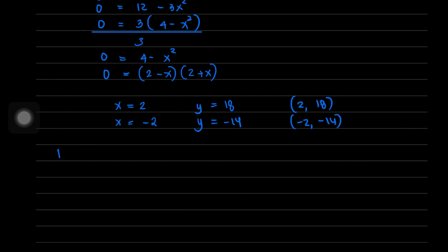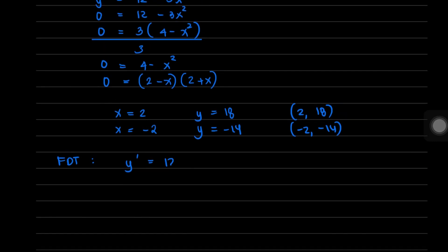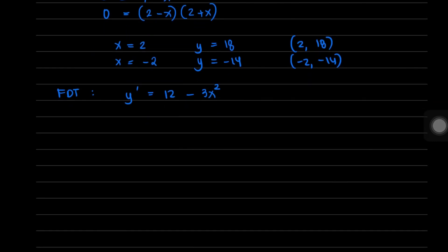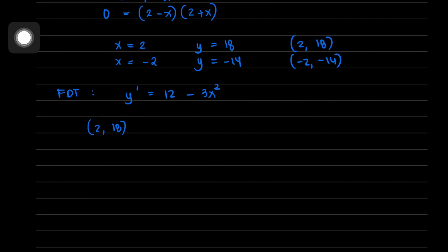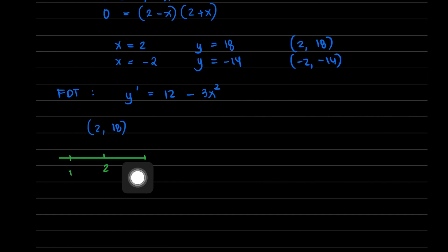Now let us perform the first derivative test to determine whether these critical points are maximum or minimum. The first derivative is y prime equals 12 minus 3x squared. For the critical point (2, 18), we test values on either side: x equals 1 and x equals 3. If x equals 1, y prime equals 9 (positive). If x equals 3, y prime equals negative 15 (negative). There is a change in sign from positive to negative.